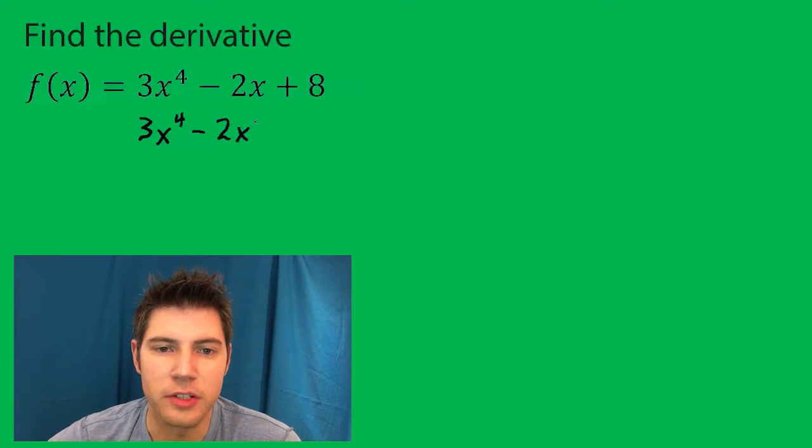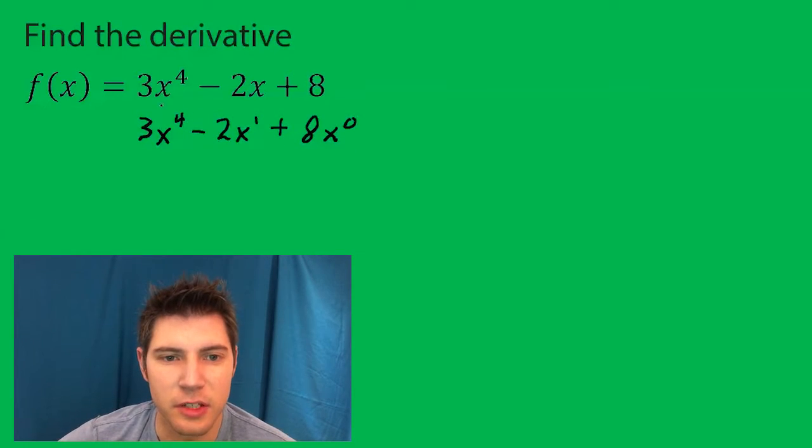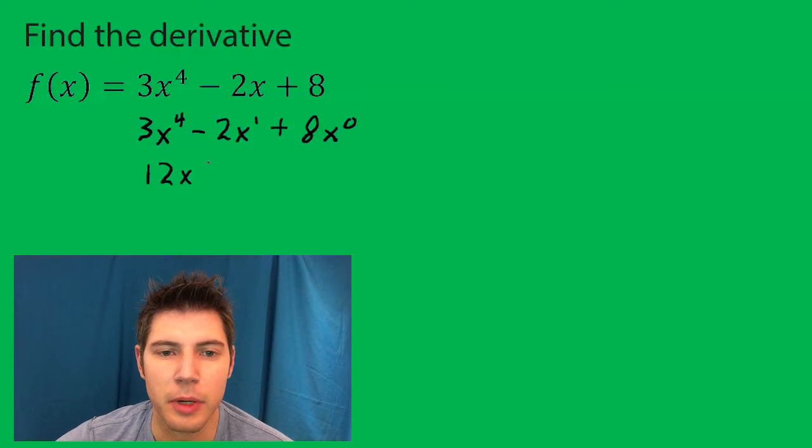So this is 2x to the 1, and this is 8x to the 0. So now we bring this exponent down, 12x, and then we drop it by 1.